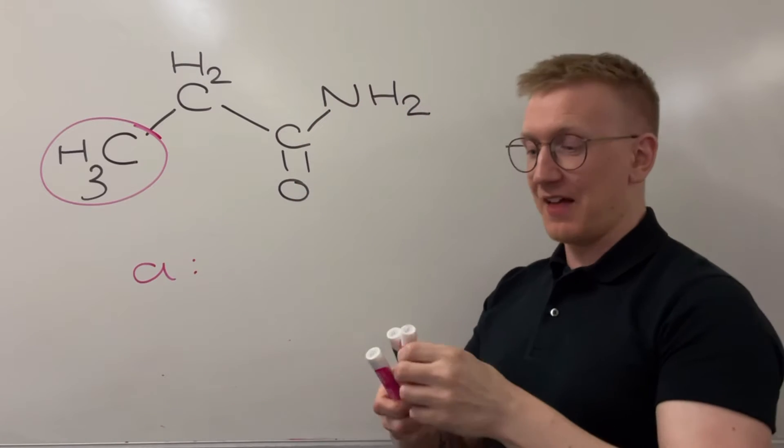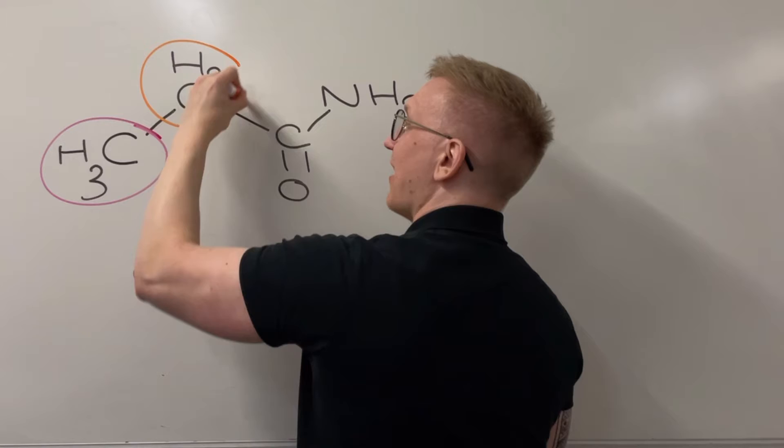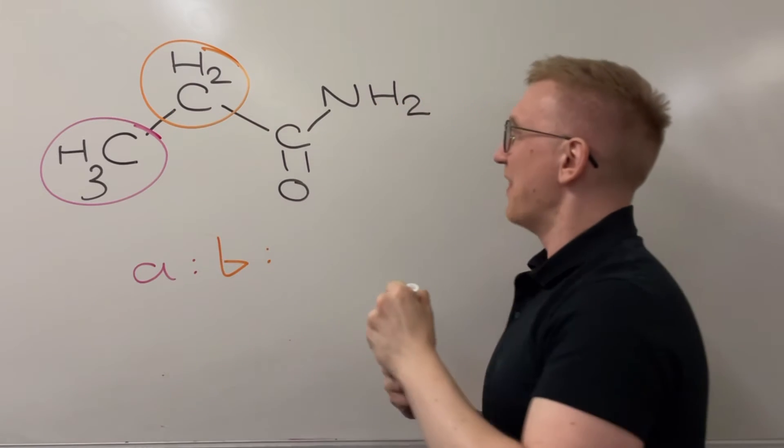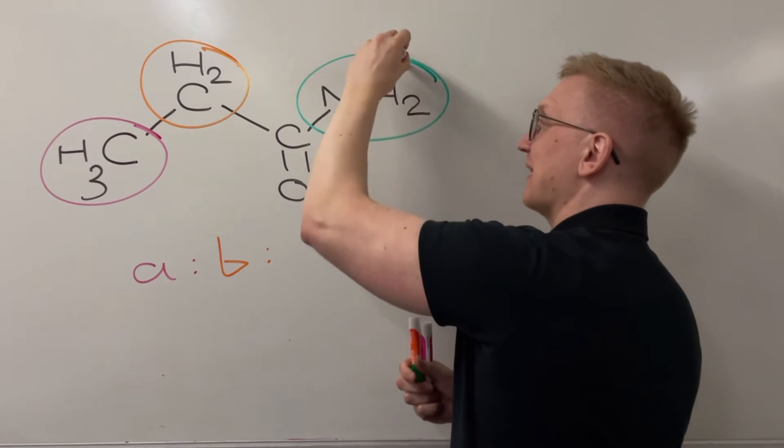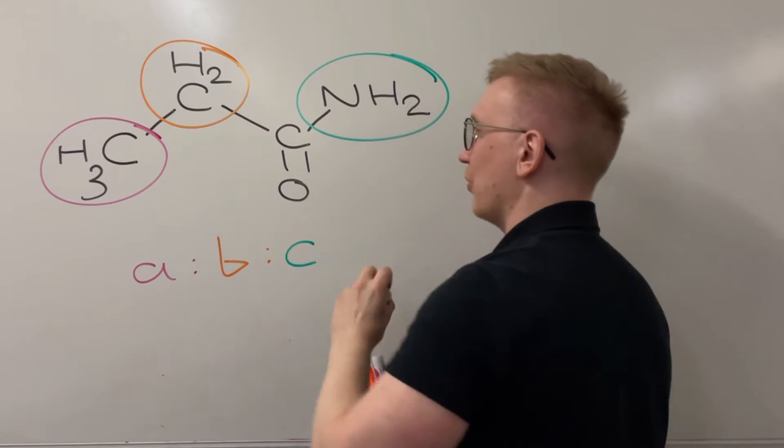We're going to be looking at this middle CH2 being a hydrogen environment, let's call that one B. And then finally, we're going to be looking at this NH2 group here being an environment, and we're going to call that C.